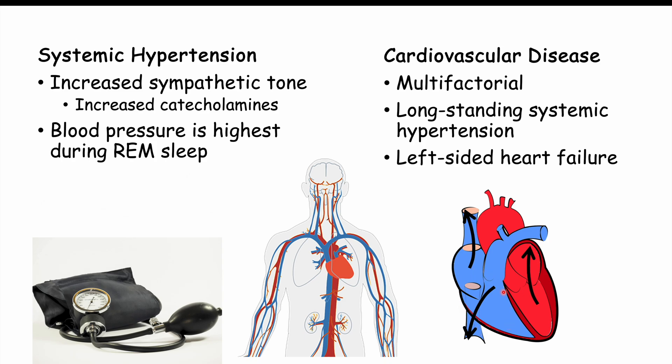This right-sided heart failure can also occur from left-sided heart failure, but in that case it would not be cor pulmonale — cor pulmonale is isolated right-sided heart failure caused specifically by a pulmonary cause. Here the ultimate cause is left-sided heart failure. In fact, the number one cause of right-sided heart failure is left-sided heart failure, which is important to point out.